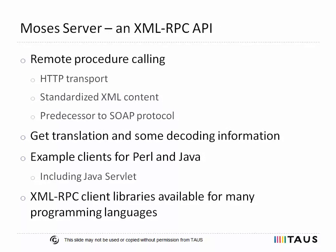To integrate the MOSES decoder in a web setting, be it on the public internet or a private intranet, there are two options available. One of them is MOSES server, an XML-RPC API to access the MOSES decoder. XML-RPC is a standard for remote procedure calls over the web, which precedes the later, more well-known but also more complicated SOAP protocol. MOSES server provides a simple API to retrieve the translation for a single source sentence and optionally some internal decoding information to determine how MOSES arrived at a specific translation. Because XML-RPC is a standard, there are libraries available for many programming languages, so one is not limited to C++. A sample client written in Perl is available, as well as a Java servlet enabling the translation of web pages on Java-based servers.